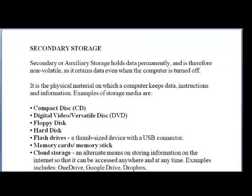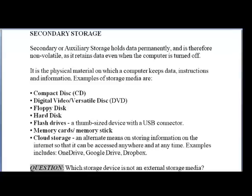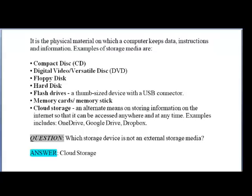Secondary storage, otherwise known as auxiliary storage, holds data permanently and is therefore non-volatile — even when the computer is turned off, the information on that storage medium will always be there. It is a physical material on which a computer keeps data, instructions, and information. Sometimes you are working on your computer and need to save information — you put that on your secondary storage device. If your phone memory is getting low, you can use a secondary storage device to back up the memory capacity of your phone. Examples include compact discs (CDs), digital versatile discs (DVDs), floppy discs (no longer in use), and hard discs embedded in the computer.